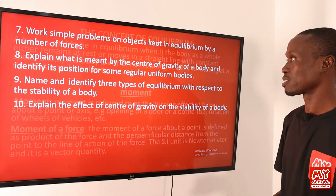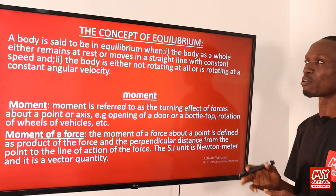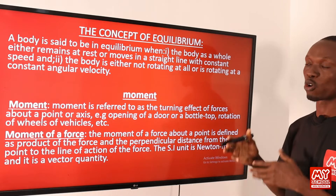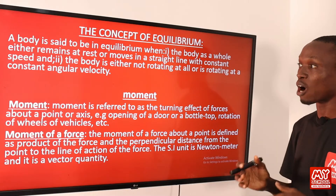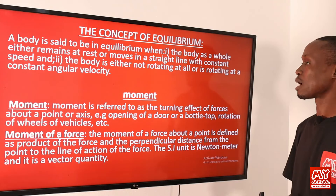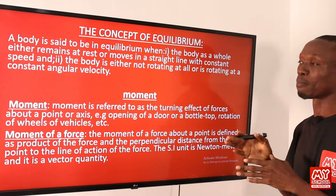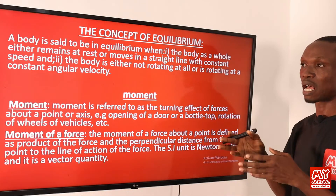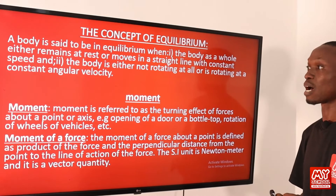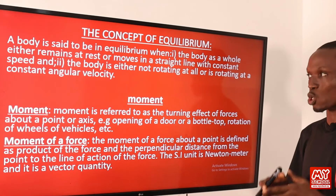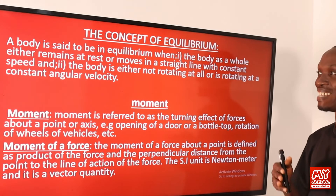Let's begin with the lesson proper. A body is said to be in equilibrium when: one, the body as a whole either remains at rest or moves in a straight line with constant speed; two, the body is either not rotating at all or is rotating at a constant angular velocity. The first condition means all forces acting on the body balance out. The second condition implies that the net torque acting on the body is also zero.